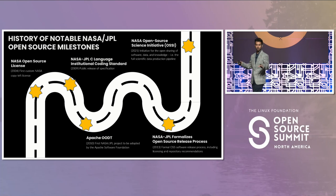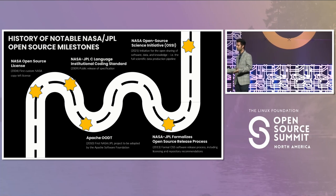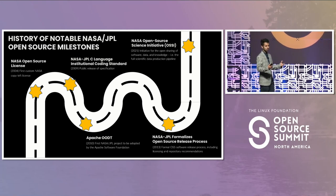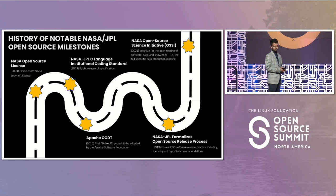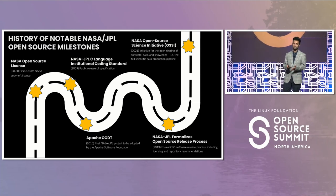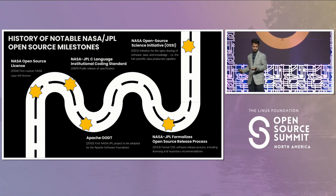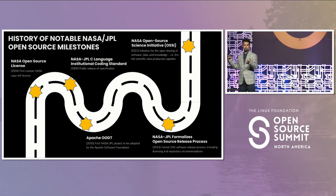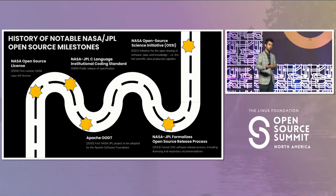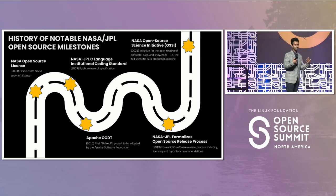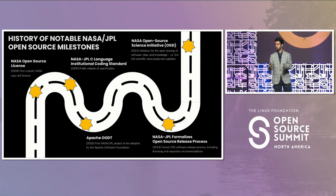In 2010, a project called OODT was the first to be adopted by the Apache Software Foundation, which really gave us experience about governance models and how to run projects out in open source. By 2013, NASA JPL had formalized its release process for taking an internal project and releasing it out to the public and creating an open source community. And lately, in the past few years, the drive at NASA has been to do something called open science — not just to release the code and create open source communities, but also release the data sets and the papers and really try to make a reproducible scientific pipeline.